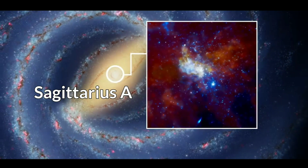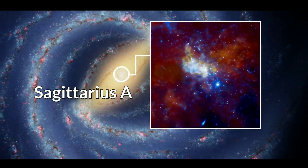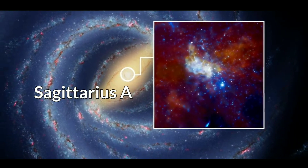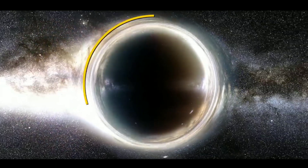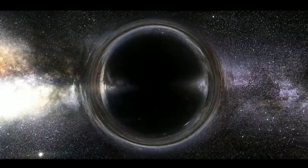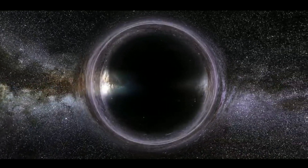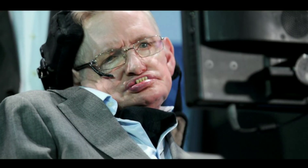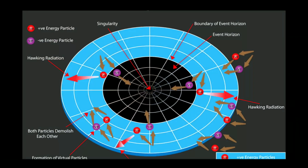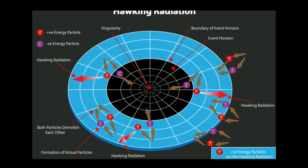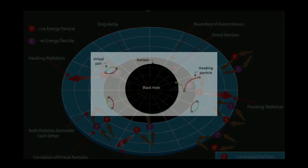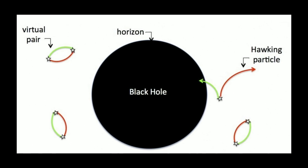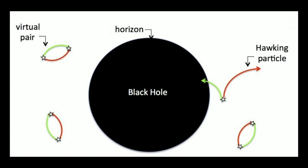This black hole is 4 million times the mass of the Sun. If it is a black hole, there is a rocket in the Milky Way. If it is a rock, then the black hole will be removed. The black hole is very light. The silver radiation will be reduced. This black hole process is very slow.